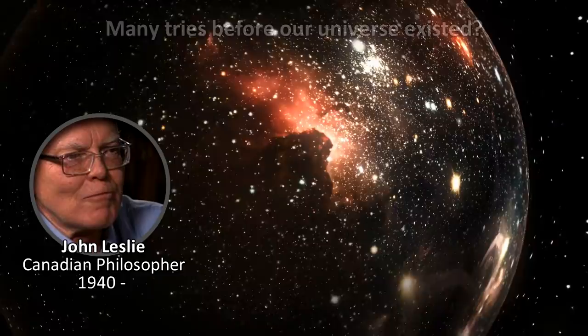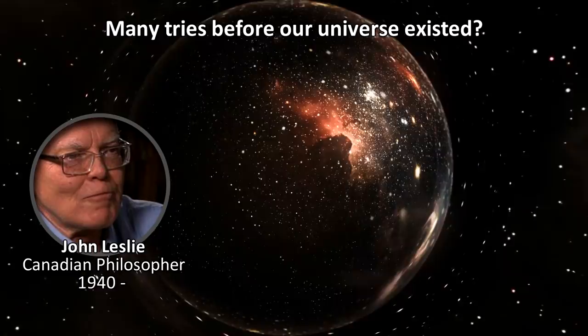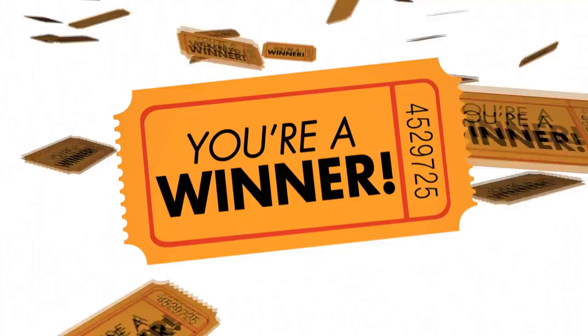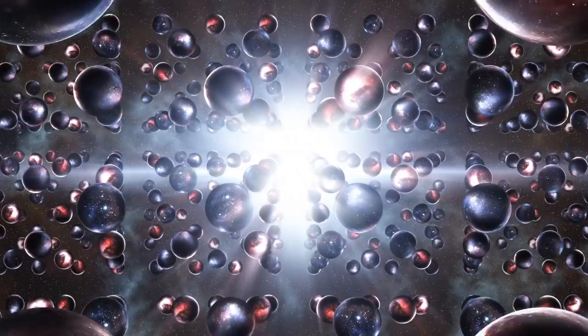Philosophers like John Leslie of the University of Guelph think that the universe had multiple tries before we happen to exist. And what we see could be a form of natural selection, similar to evolution. If enough people buy enough lottery tickets, someone is going to win, eventually. If enough universes formed, you're bound to get one with life like ours.